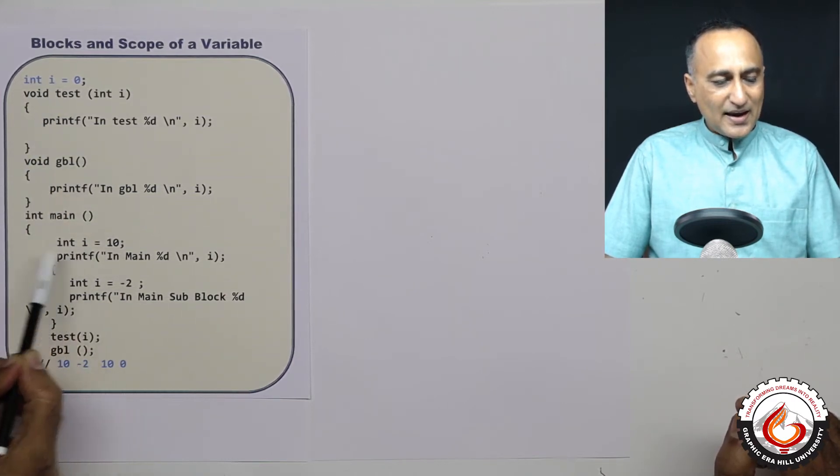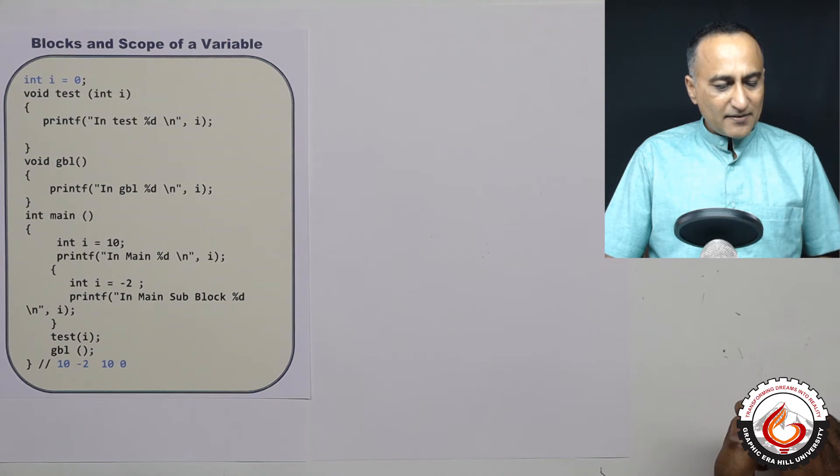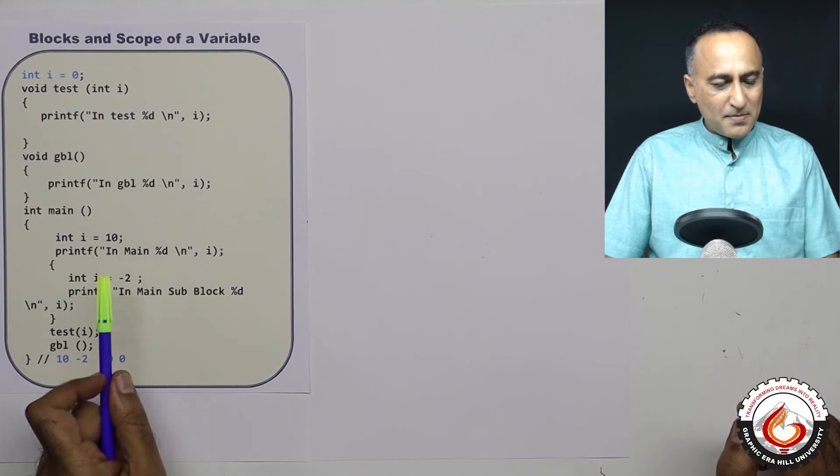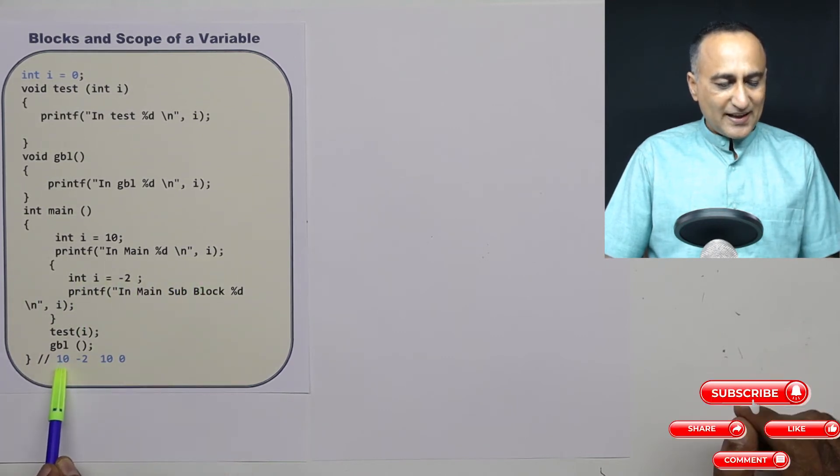The i has a scope only within this particular flower brace. So when I go ahead and try to print the value of i in main, the value of i going to be printed is going to be 10.